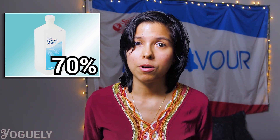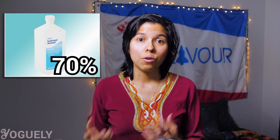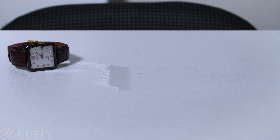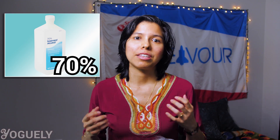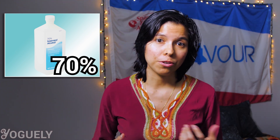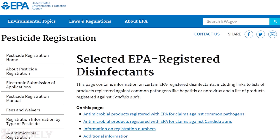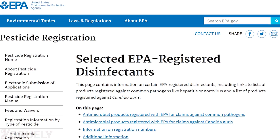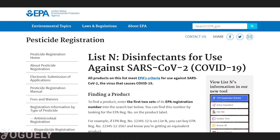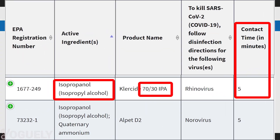How long should 70% isopropyl alcohol sit on surfaces to disinfect? According to the EPA, the contact time is the amount of time the surface should be visibly wet. The contact time needed may vary depending on the microbe you wish to destroy and the concentration of isopropyl alcohol used. The EPA recommends as much as 5 minutes of contact time with solutions of 70% isopropyl alcohol and 30% water to be effective against COVID-19.